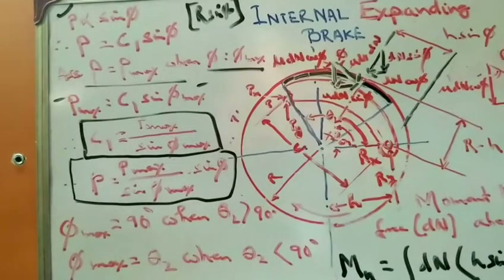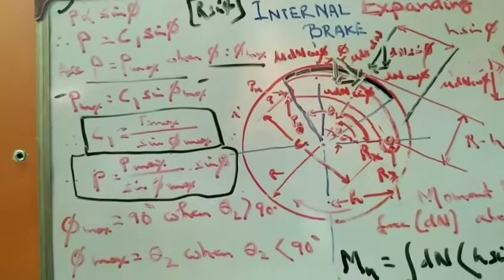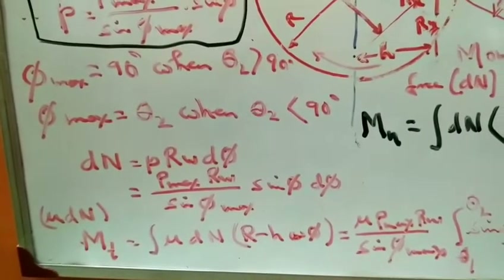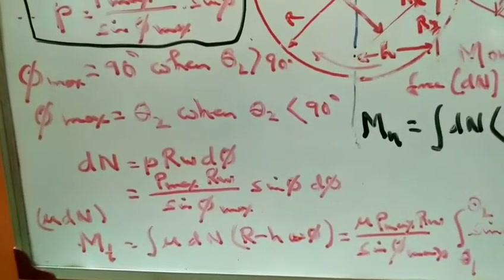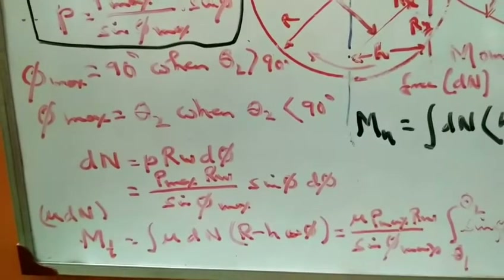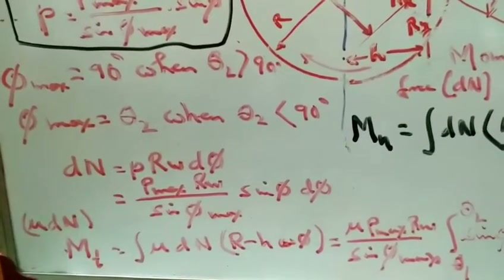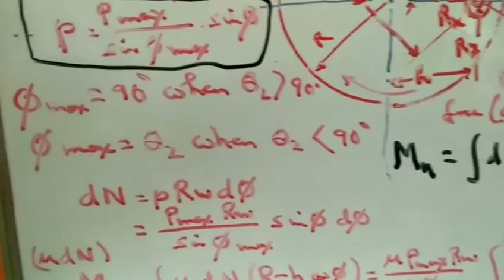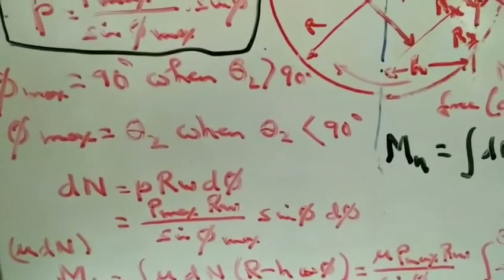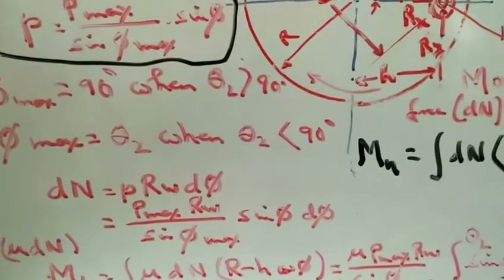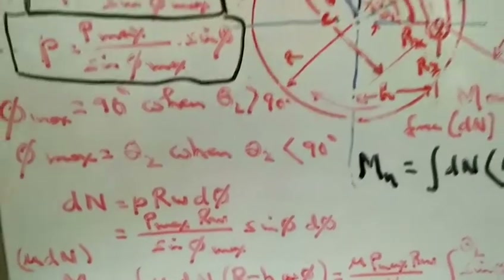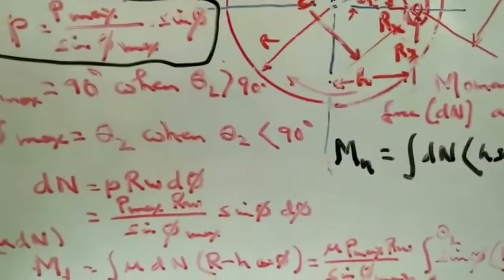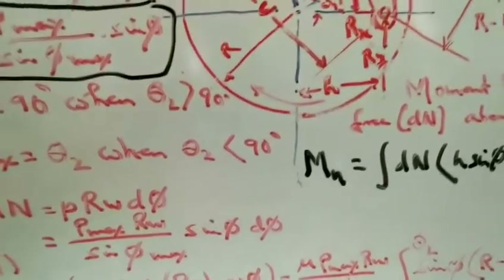From the previous part, the normal reaction dn equals P times r times omega times d(phi). Substituting the value of P, we get dn equals (P_max times r times omega times sin(phi) times d(phi)) divided by sin(phi_max). This is the value of dn, which we now use to take moments.